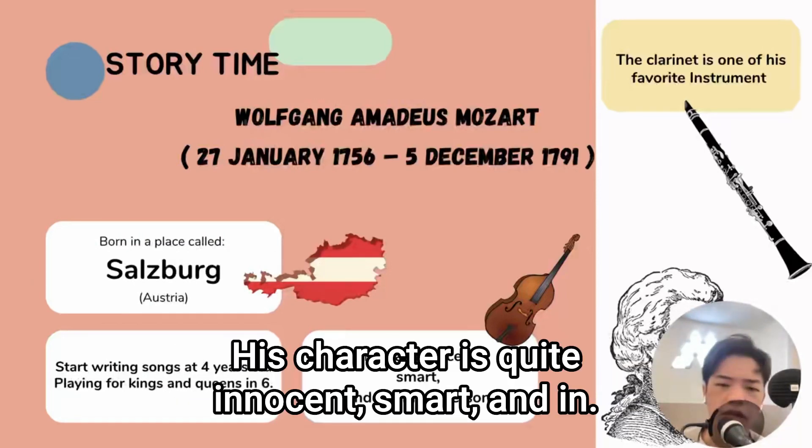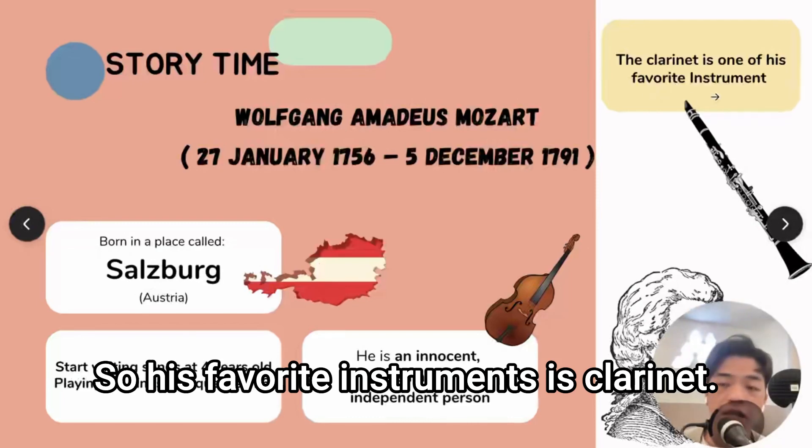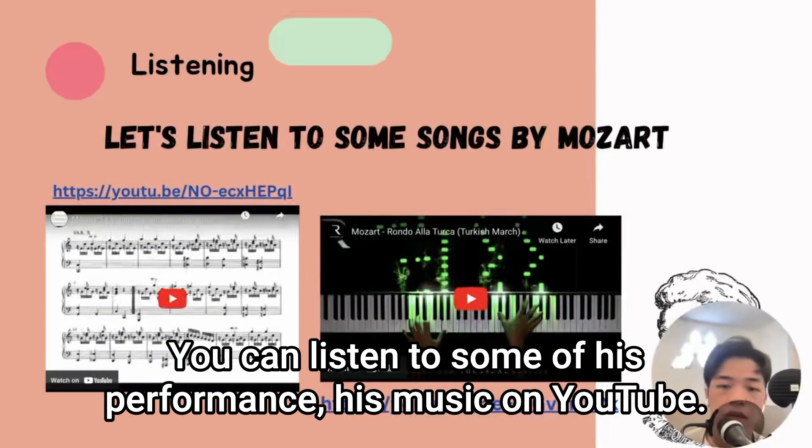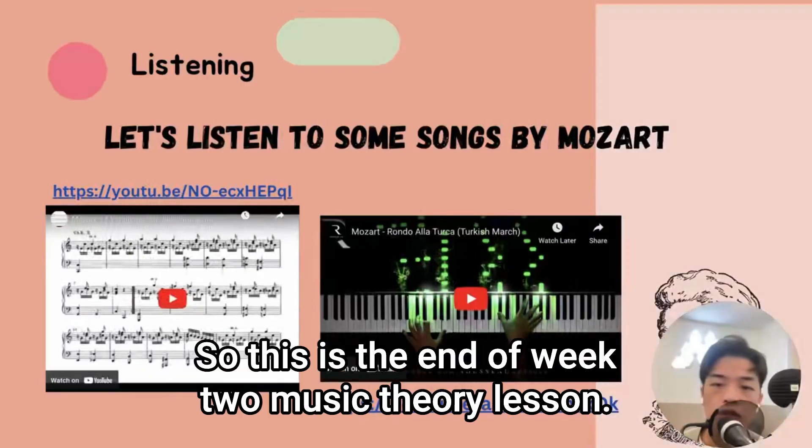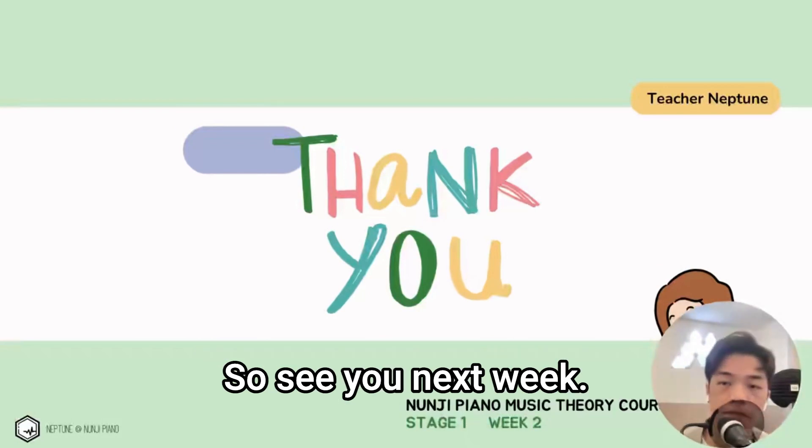His character is quite innocent, smart, and independent. So his favorite instrument is clarinet. You can listen to some of his performance, his music on YouTube. Go and search Turkey March. So this is the end of week two music theory lesson. See you next week, bye bye.